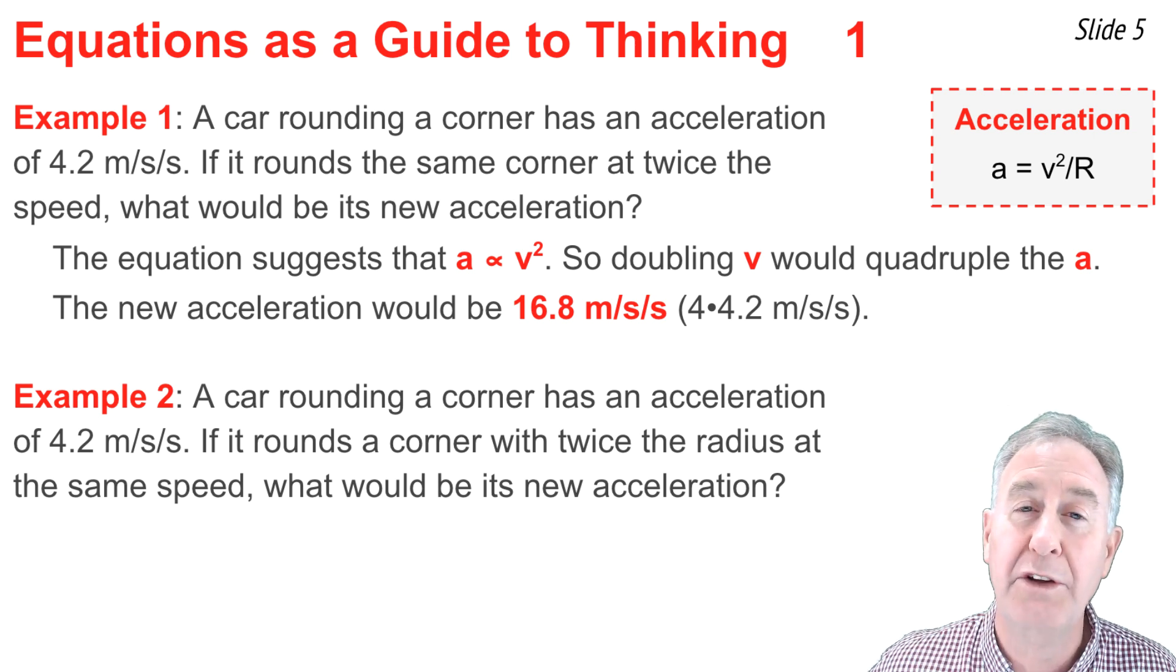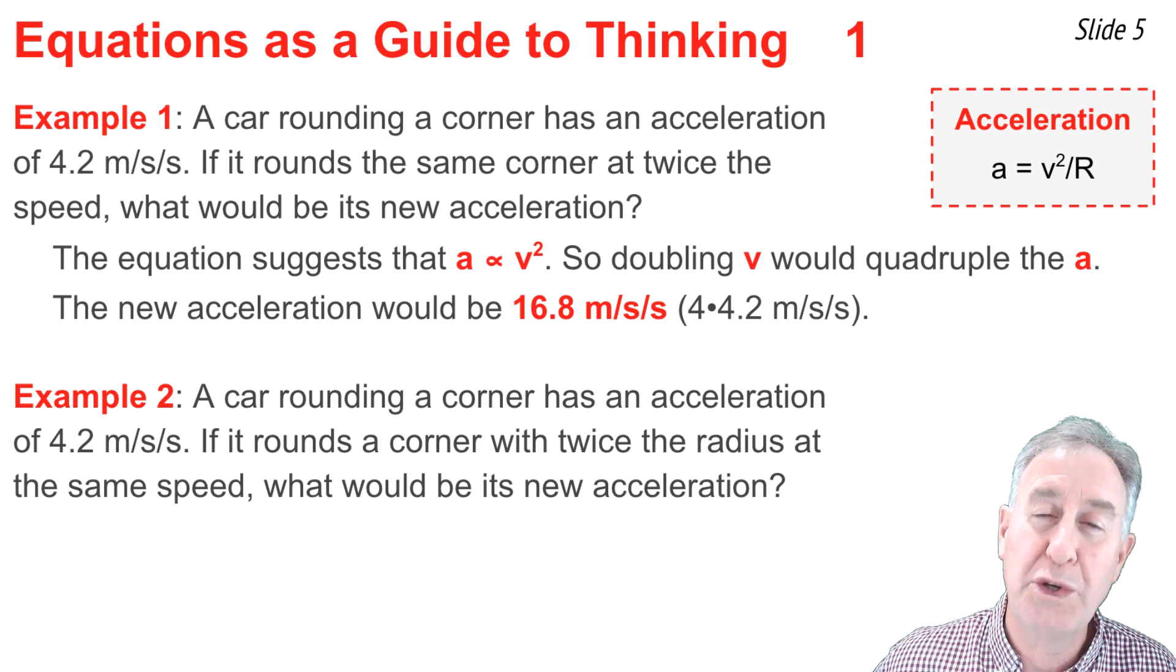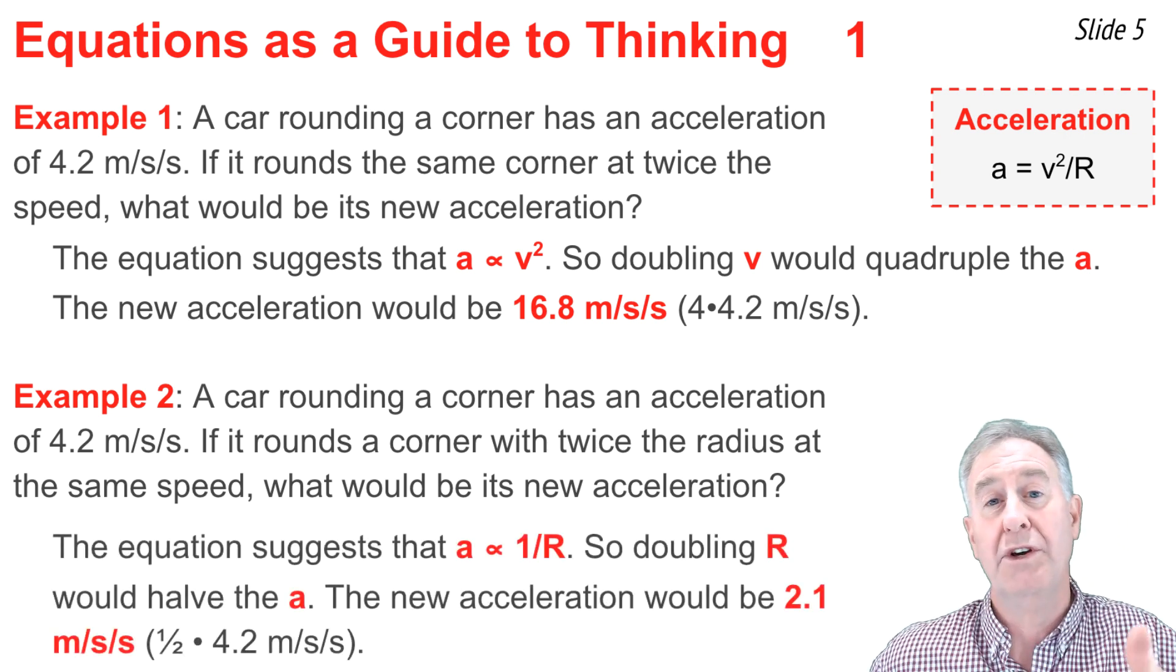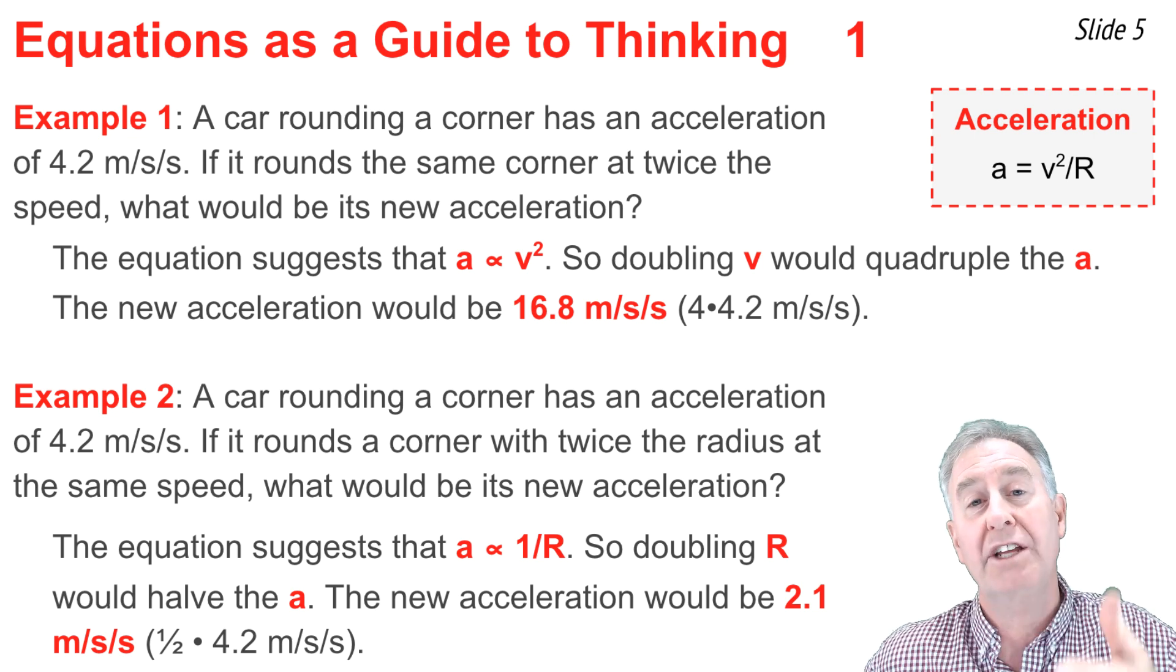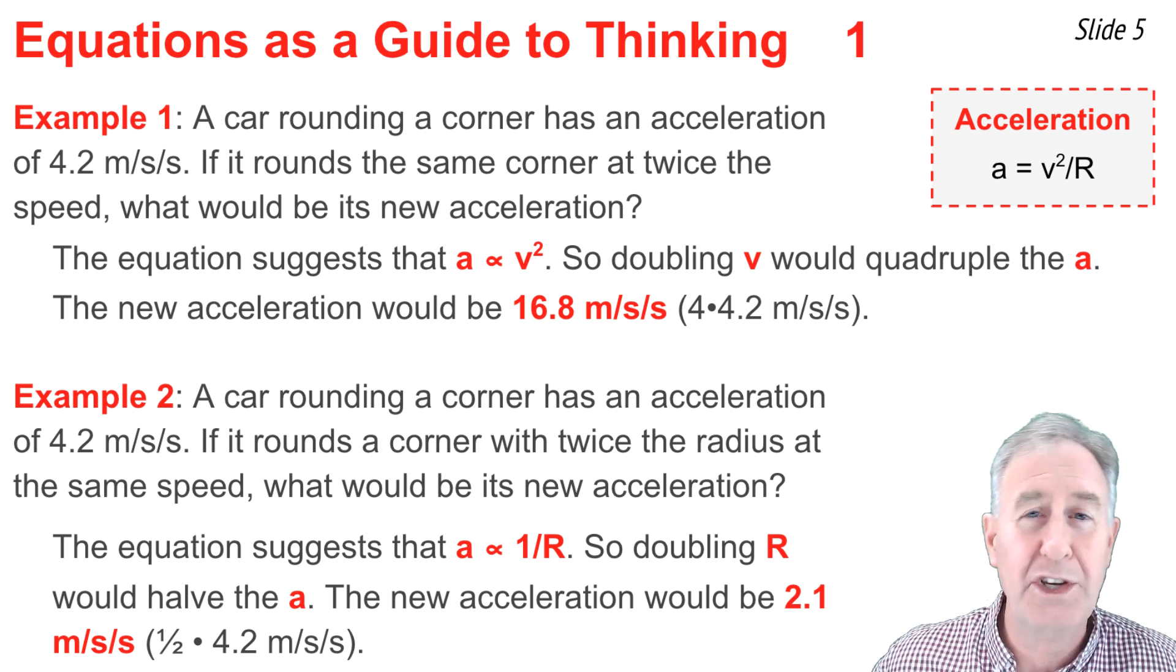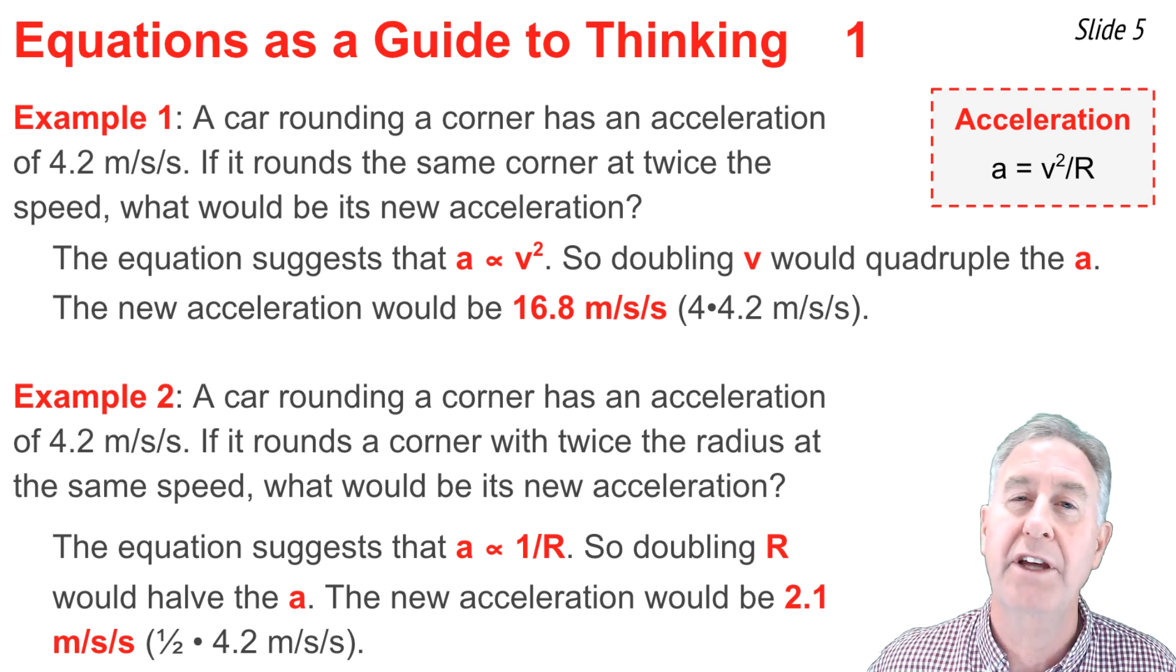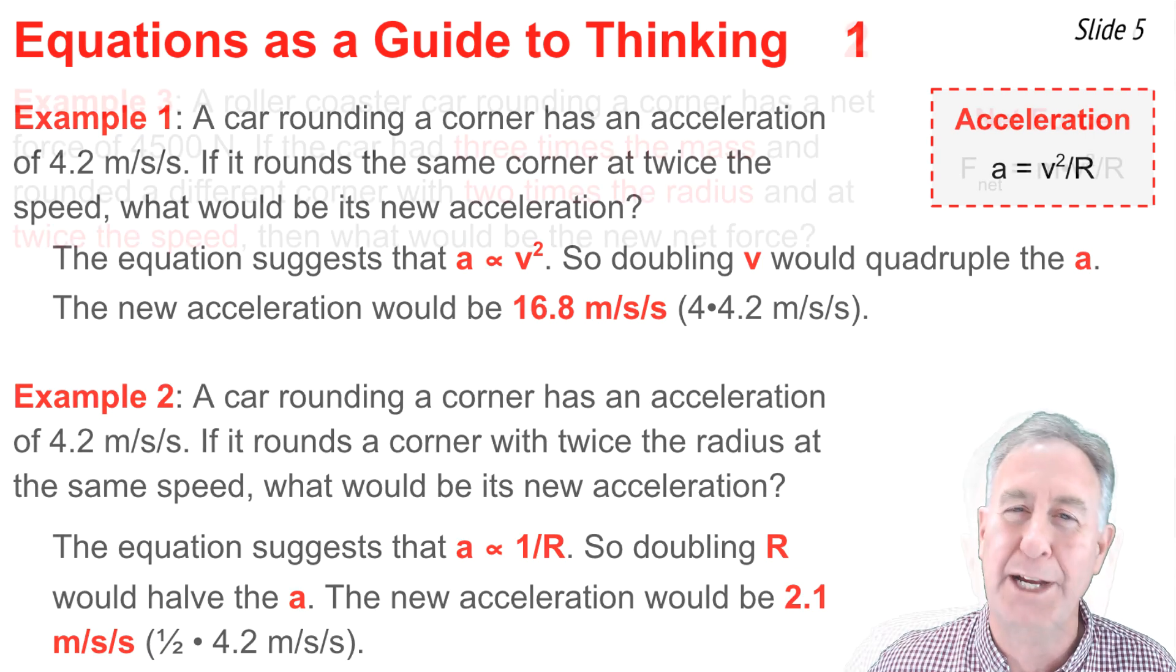So now I need to focus on the acceleration radius relationship, which is an inversely proportional relationship. In saying it that way, I'm saying that if the radius goes up, the acceleration goes down. And by whatever factor the radius increases, the acceleration decreases by that same factor. So a doubling of the radius would cause the acceleration to half. And my new answer is 2.1 meters per second per second. I get that by taking 4.2 and dividing it by 2.